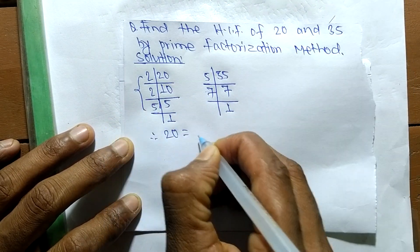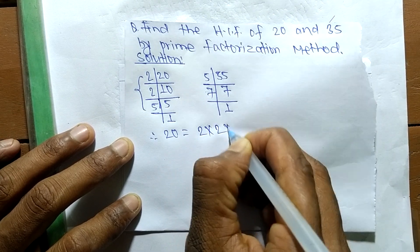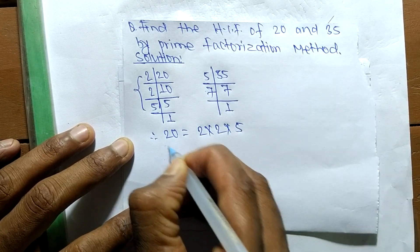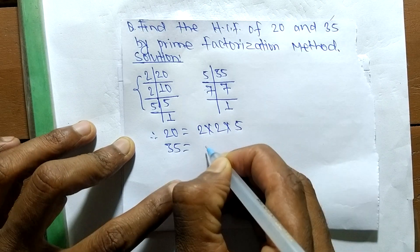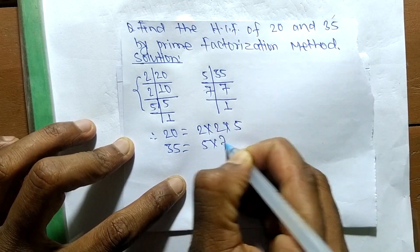...equal to 2 times 2 times 5, and 35 is equal to 5 times 7.